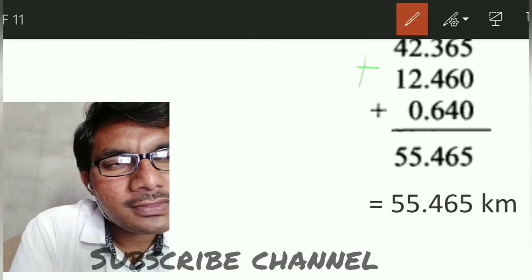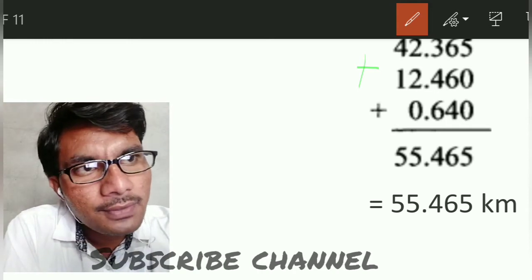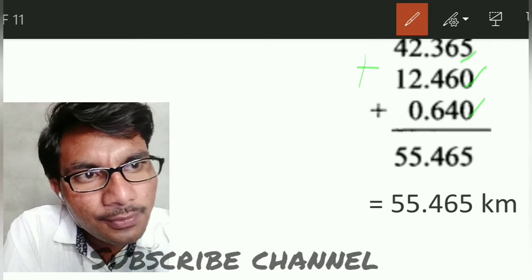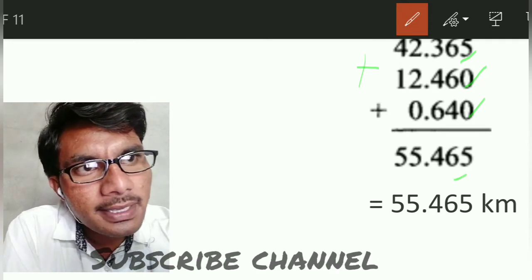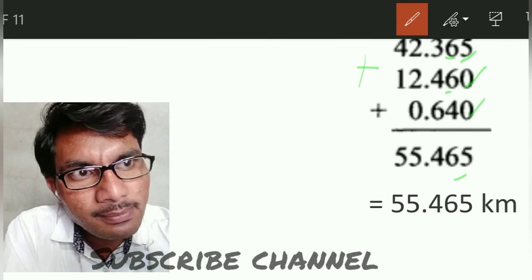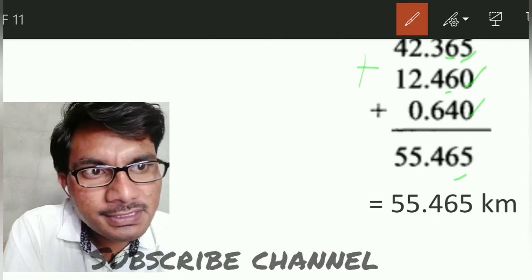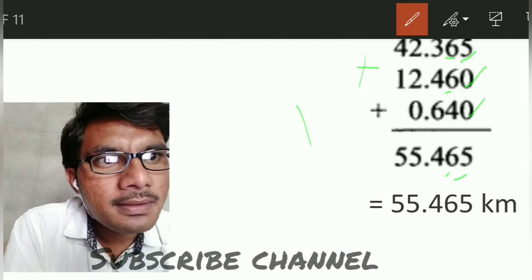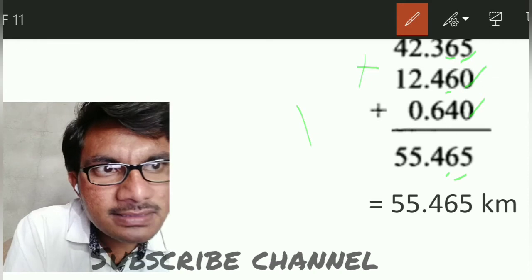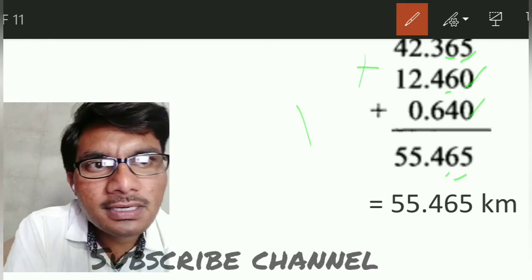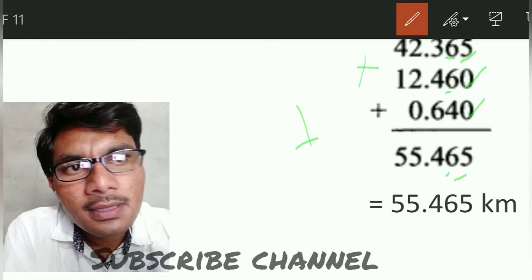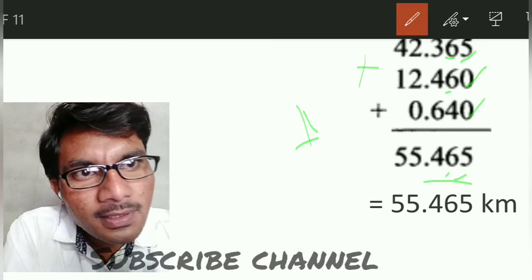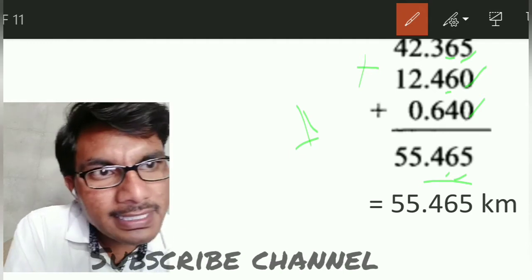Starting from the right: 5 plus 0 plus 0 equals 5. Next, 6 plus 6 equals 12, plus 4 equals 16. Write 6, carry 1. Next digit: 3 plus 4 plus 6 equals 13, plus 1 carry equals 14. Write 4, carry 1.